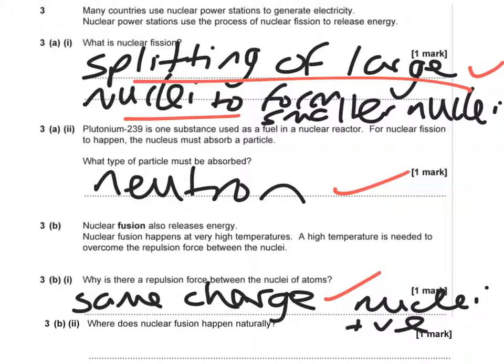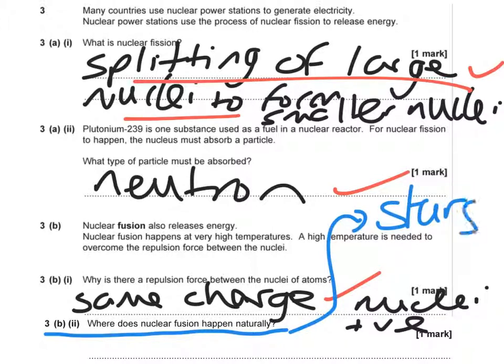Where does nuclear fusion happen naturally? Nuclear fusion happens in stars — that will get you the mark there. Nuclear fusion naturally occurs in stars, mainly main sequence stars. Nuclear fusion is happening currently in our sun at this moment in time.